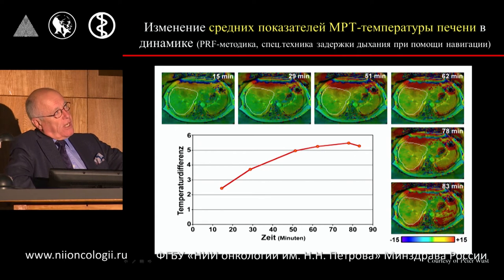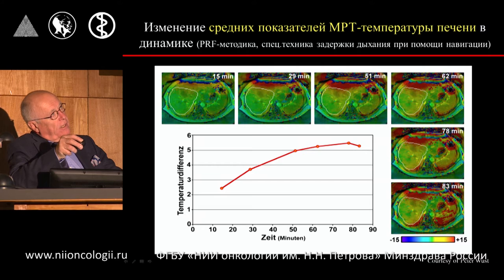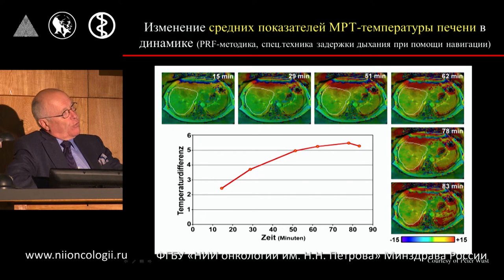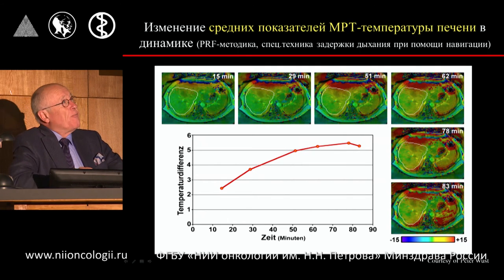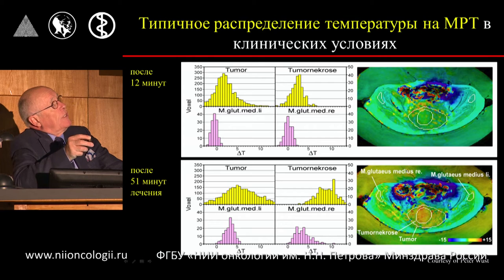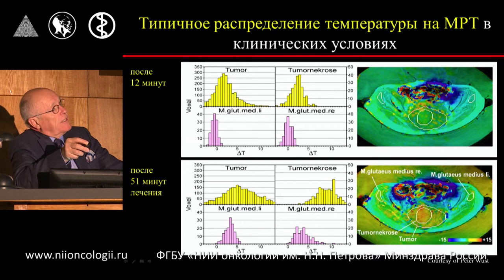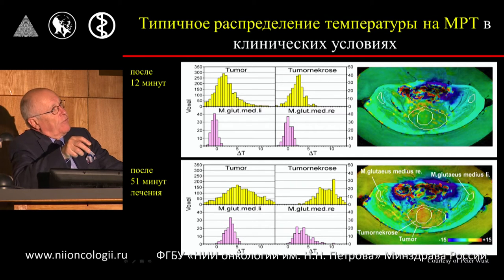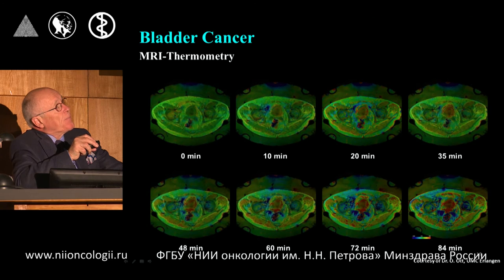We need approximately 30 to 40 minutes in order to receive the optimal temperature inside the tumour. Subsequently, if we deal with regional hyperthermia, the patient needs to be treated for approximately one hour — meaning approximately half an hour to reach the temperature — so the patient must be approximately an hour and a half inside the MR coil. You can see typical distribution of temperature on the magnet in the clinical situation: after 12 minutes the distribution is not homogeneous, but after 51 minutes we have a very good homogeneous distribution of temperature in the tumour.